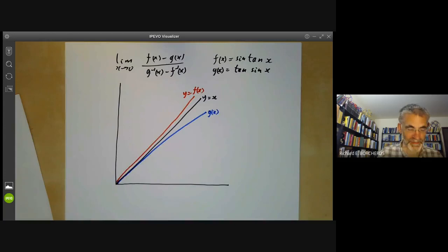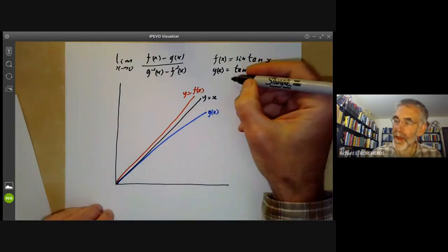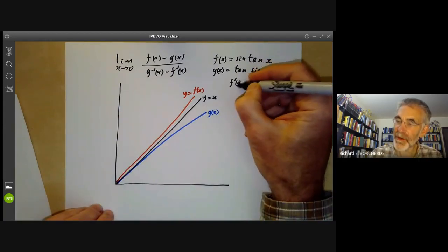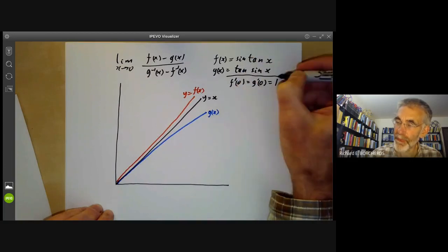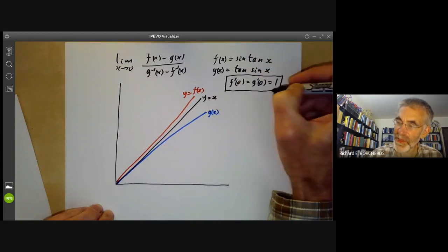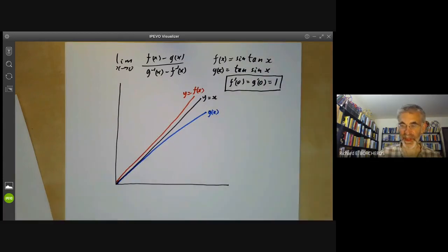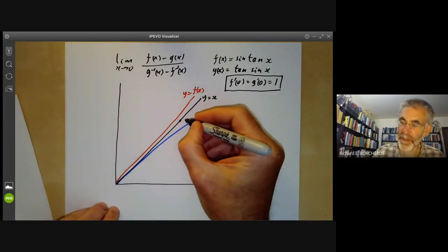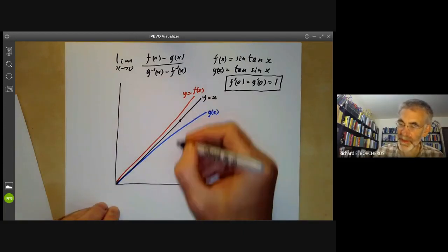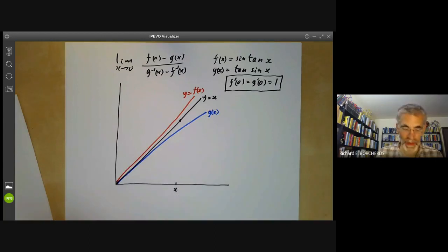The point about these functions g and f is that f'(0) equals g'(0) equals 1. And that's pretty much all we need to know about the functions plus the fact they're not too ugly. And now what you do is you choose a point x.